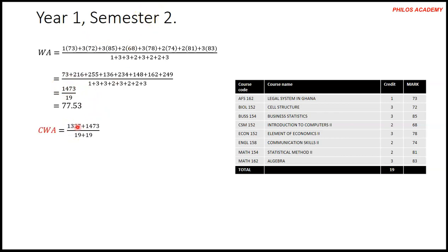For your CWA, it is your total point for the previous semester which was 1227 plus your current point for the new semester, that's 1473, divided by the total credit hours for the previous semester which was 19 plus the current semester which is 19. When you put this on your calculator, 1327 plus 1473 divided by 19 plus 19, you get 2800 divided by 38, and that gives you 73.68. So you see that for this semester 2, the weighted average for the semester is 77.53, but that won't be your CWA. This will be your CWA - that's why we call it cumulated.